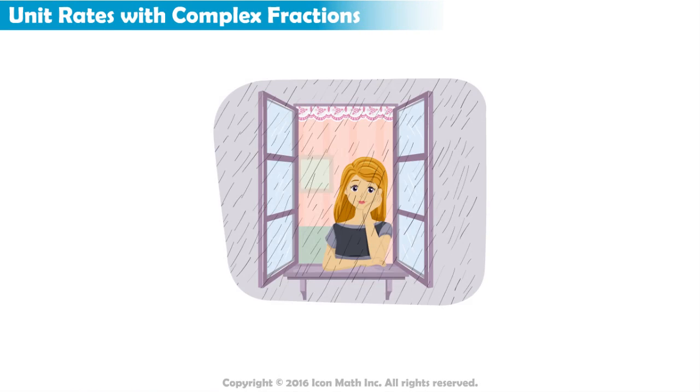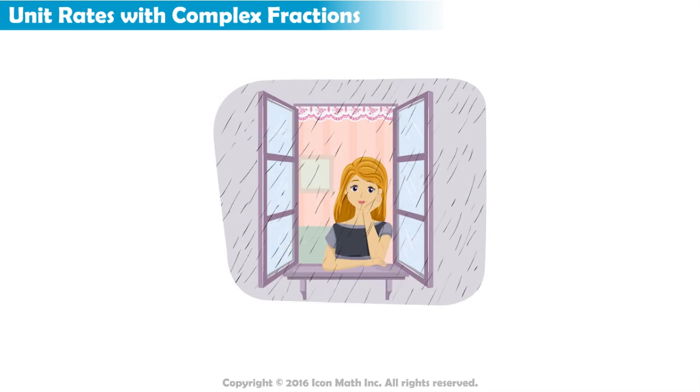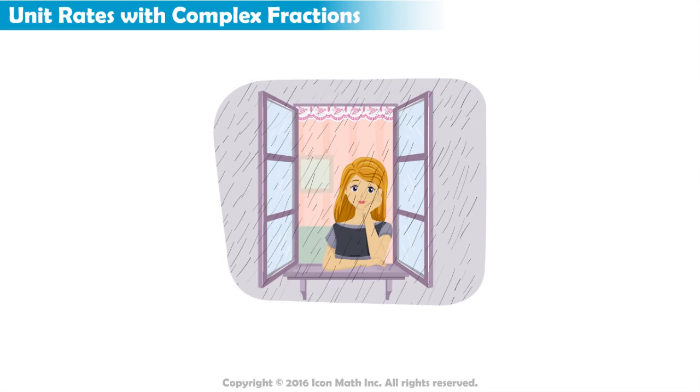Cassandra noticed heavy rain outside. She decided to investigate how much rain would fall in a half hour by placing an empty cup on her deck.